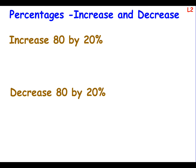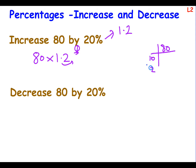Let's look at these two problems using decimals. To increase 80 by 20%: the multiplier is 1 plus 0.2, which is 1.2. So it's 80 times 1.2. Moving the decimal point, it becomes 80 times 12 divided by 10, giving us 96. So increasing 80 by 20% gives you 96.